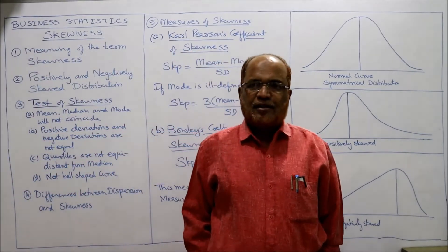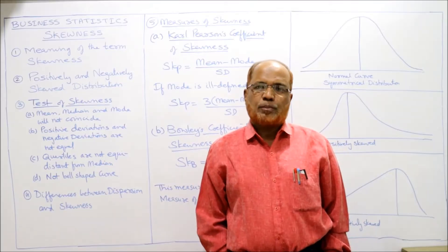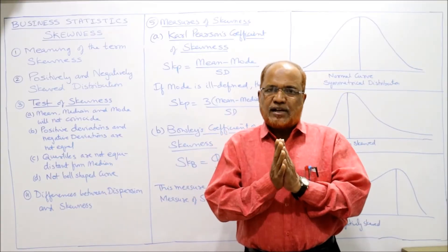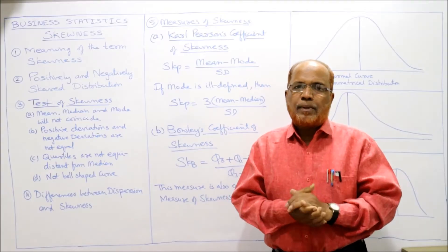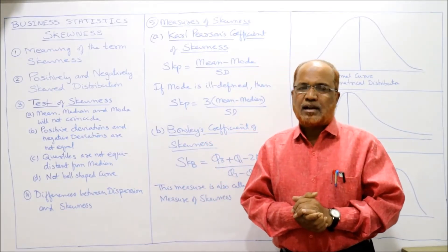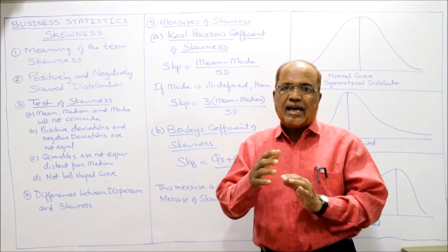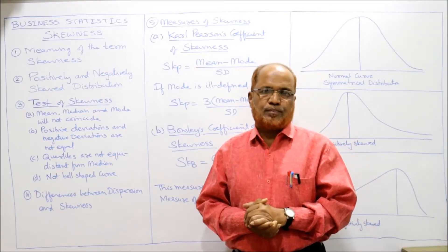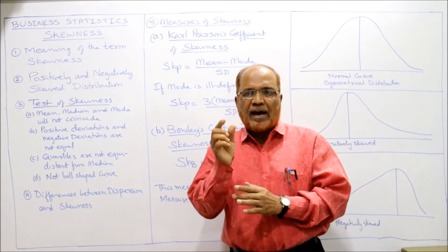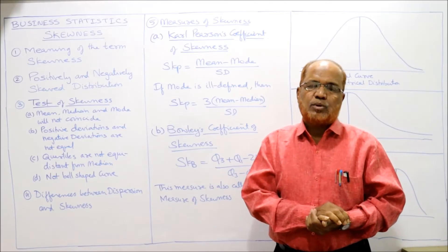Hello students, welcome back to the new topic of business statistics. So far we have completed the two basic topics: measure of central tendency and measure of dispersion. Calculating these will not tell the complete story of the distribution. Apart from calculating the central value and dispersion, there is one more technique called skewness, which explains the shape of the distribution. An average represents the central value of the whole distribution.